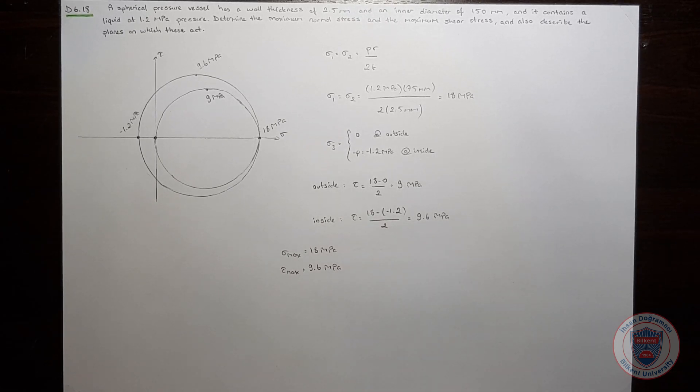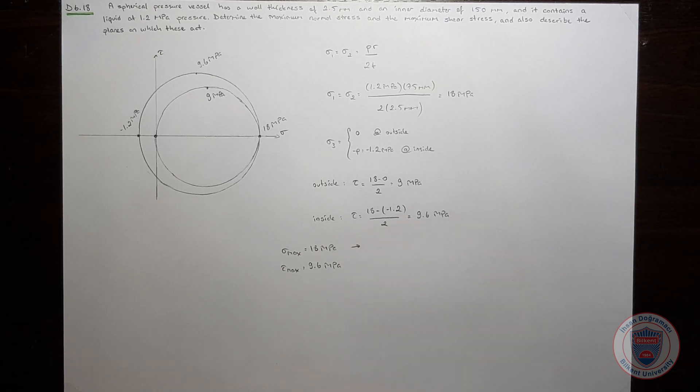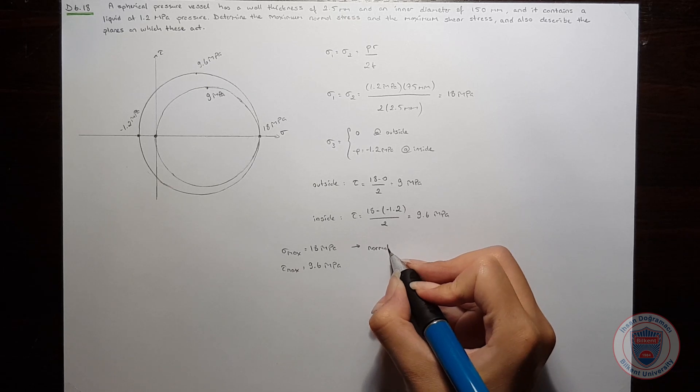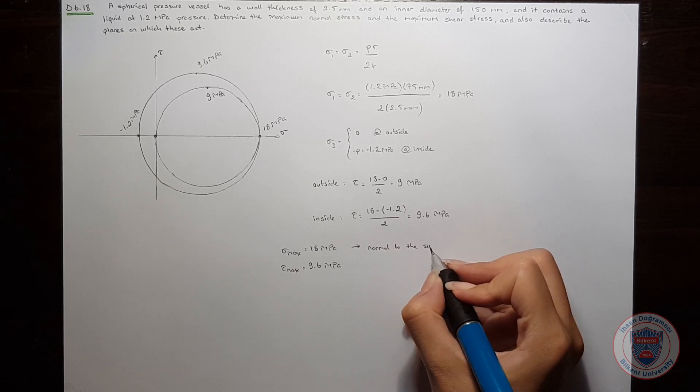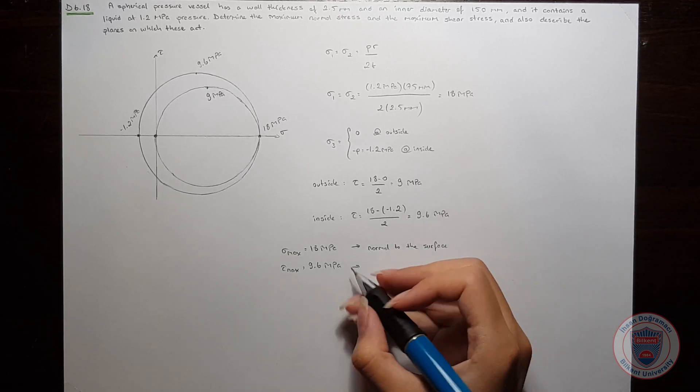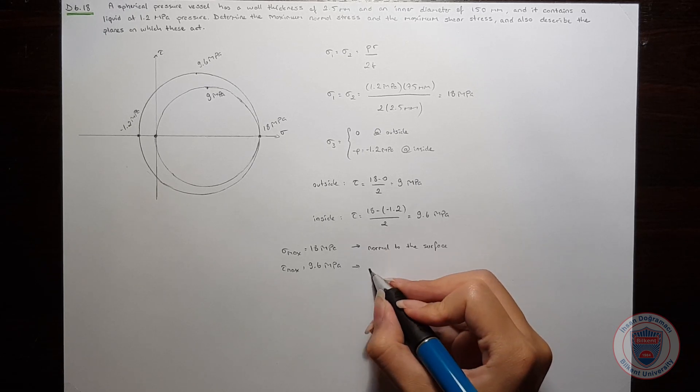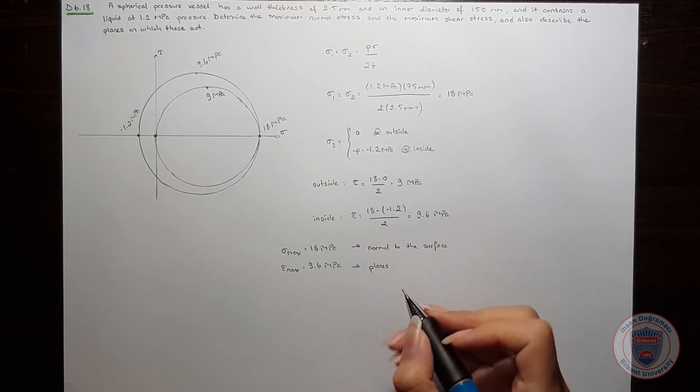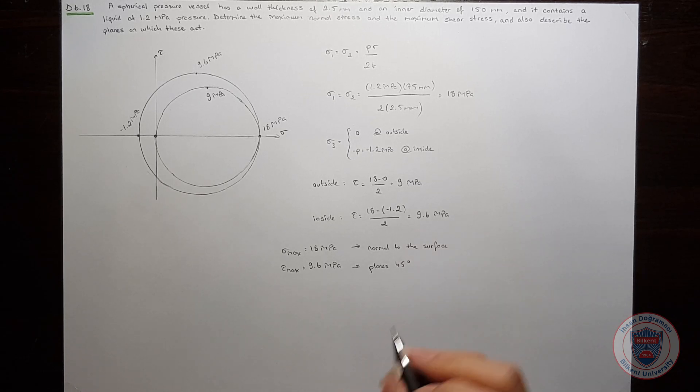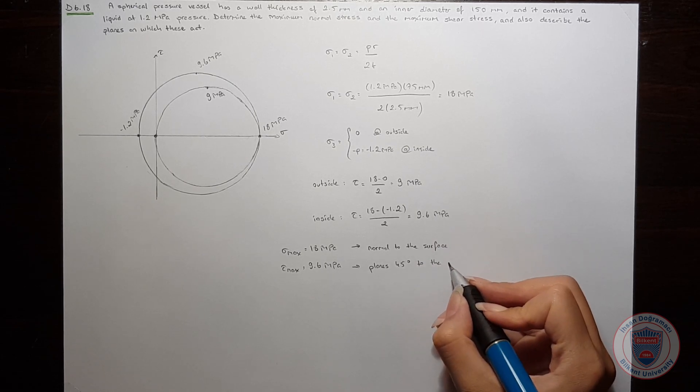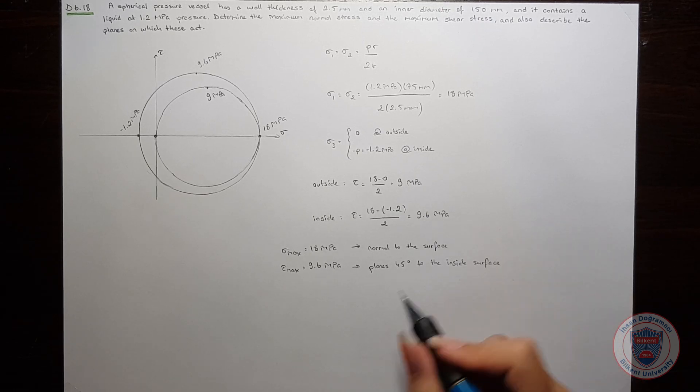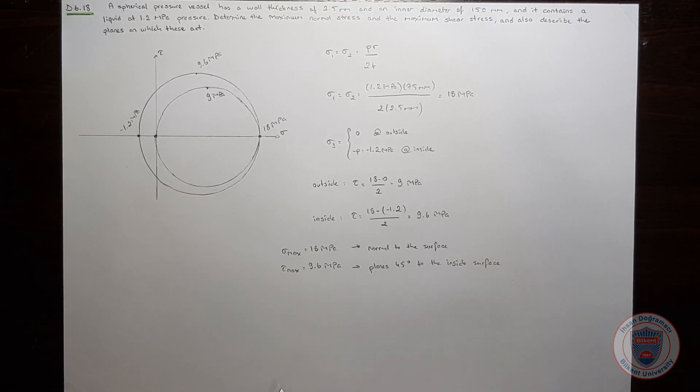We can say that the maximum normal stress will act on the planes which are normal to the surface. The maximum shear stress will act on the planes which are 45 degrees inclined to the inside surface, particularly because the maximum shear stress will act on the inside.